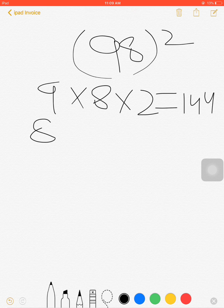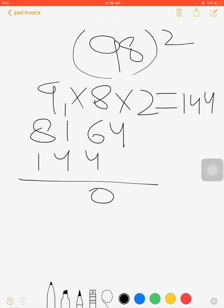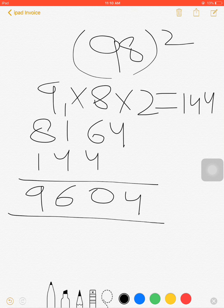So 9² is 81, 8² is 64. Now add this 144 by leaving one digit from the right, so 144. 6 and 9, 9604 will be the square of 98.